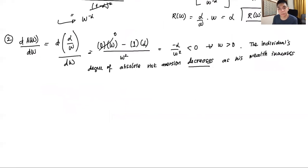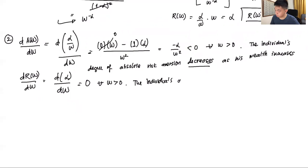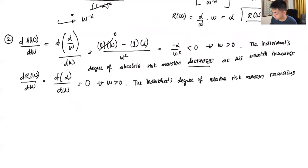Next, we want to show that relative risk aversion is unchanged. We take dR(W)/dW, which is the derivative of alpha with respect to W. Since there is no W in alpha, that derivative is zero for all W > 0. This means the individual's degree of relative risk aversion remains constant as wealth increases. We've shown both phenomena clearly using the Arrow-Pratt conditions.